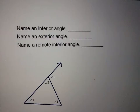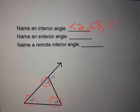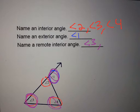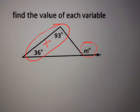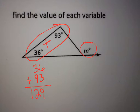The next one — interior angles are the ones on the inside of the triangle: angles 2, 3, and 4. The exterior is angle 1. The remote interior angles are the ones far away from the exterior — that's angles 3 and 4. There's a relationship where the two remote interior angles add up to equal the exterior angle. So 36 plus 93 equals 129.